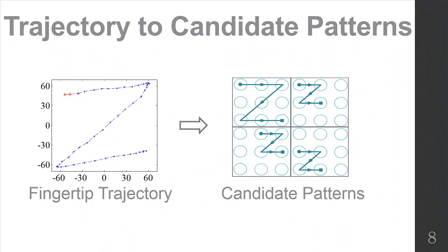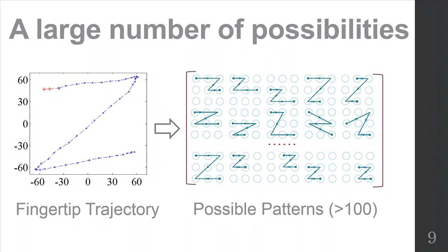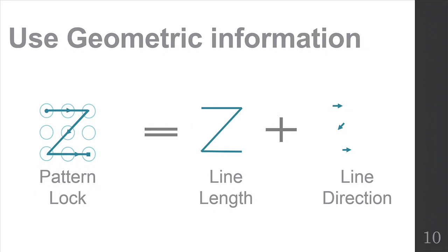And this is another challenge: the fingertip movement can be mapped to a number of patterns, as shown in this example. The trajectory can map a lot of possible patterns. So, how can Bob address it? Before addressing this problem, we first analyze the pattern. This pattern can be divided into two parts: one is the line length, and the other is the line direction corresponding to the line segment.